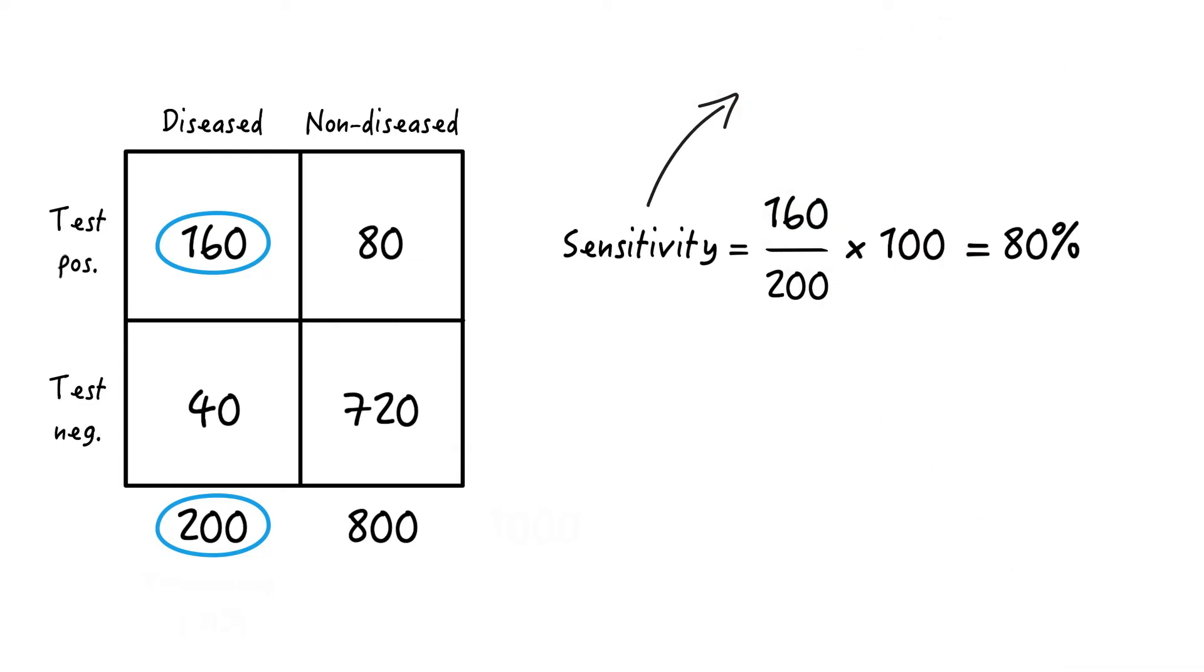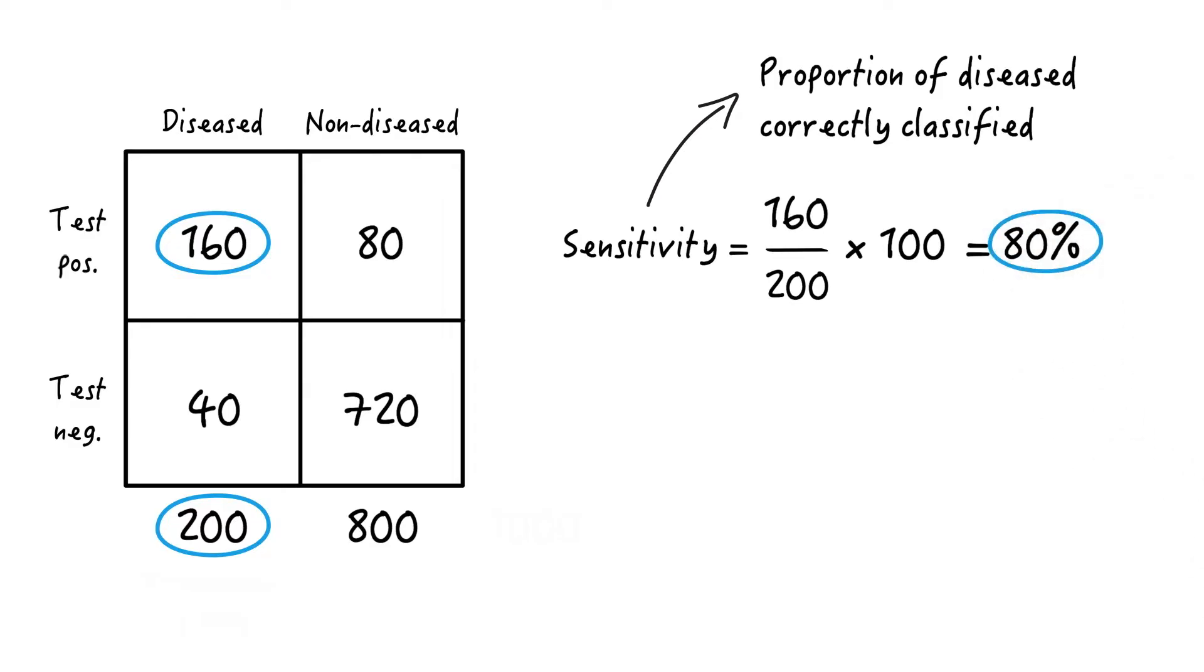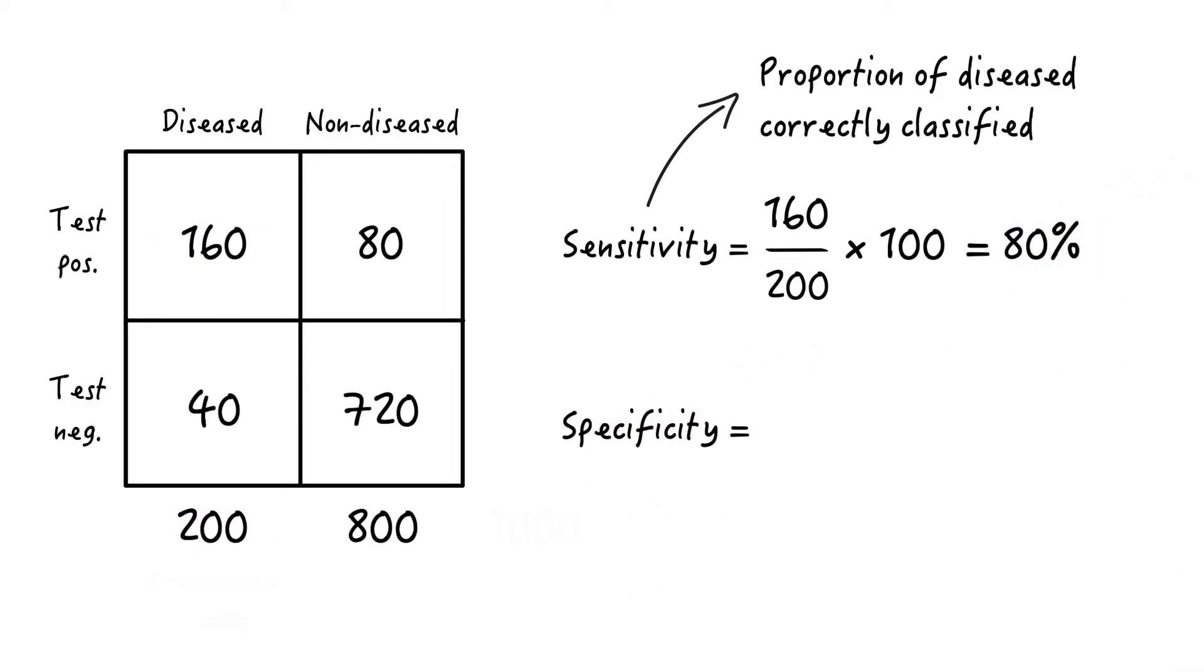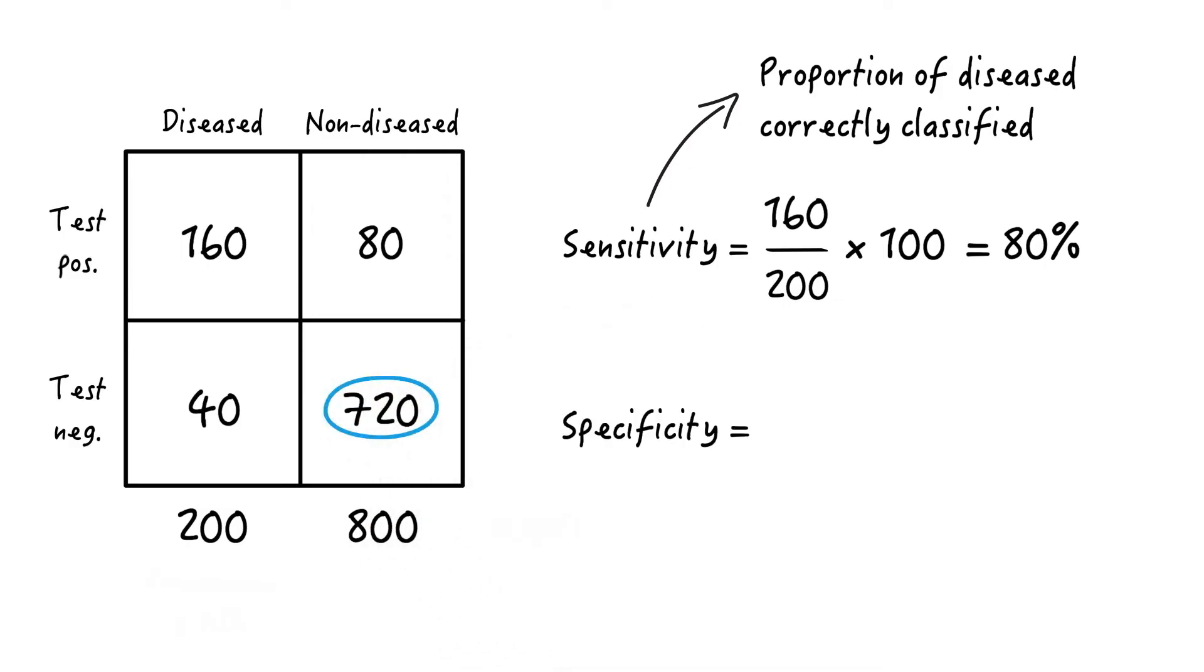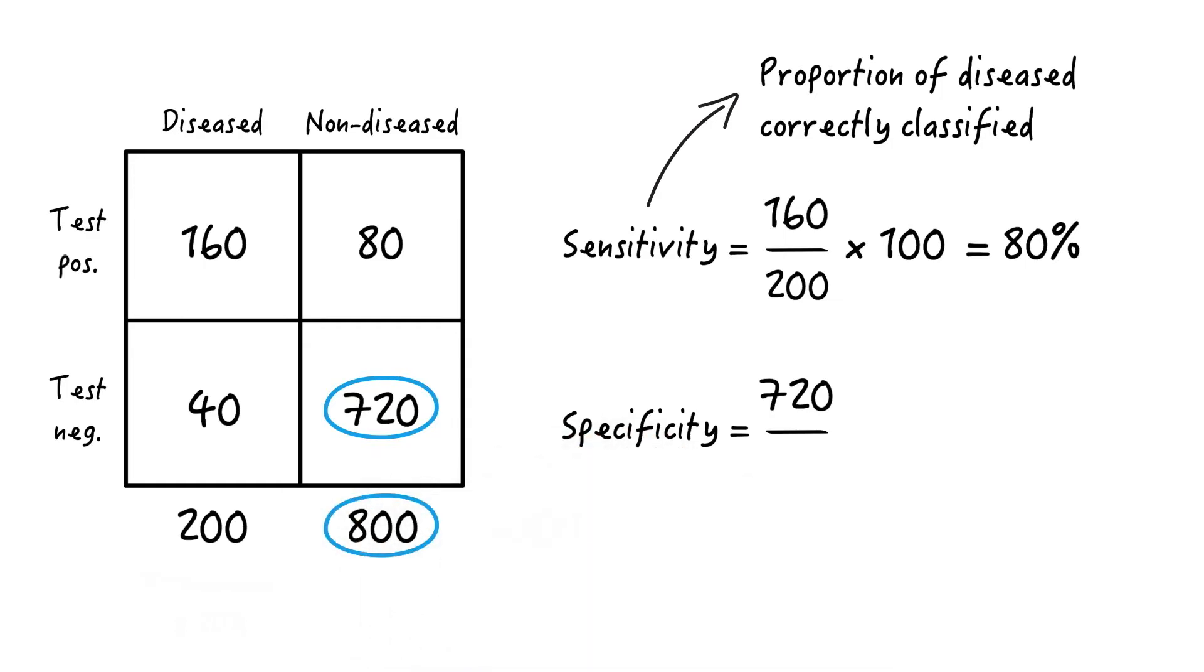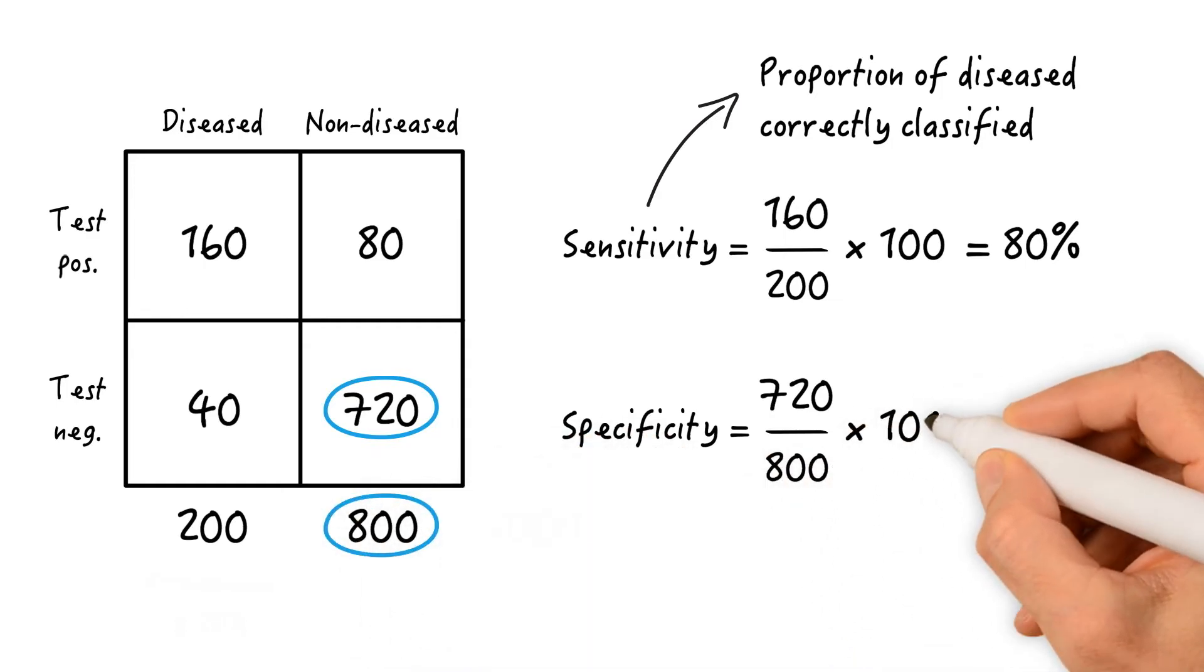In other words, the sensitivity is the proportion of diseased individuals correctly classified, and that's 80% in this case. The specificity is calculated as the number of non-diseased individuals correctly classified, so 720 divided by all non-diseased individuals of 800 times 100 and that equals 90%. So the specificity is the proportion of non-diseased correctly classified.